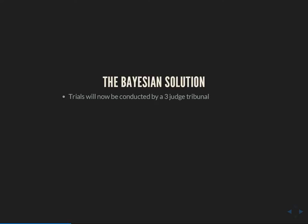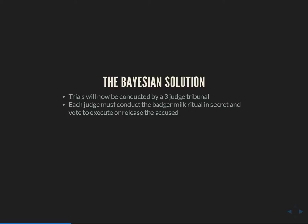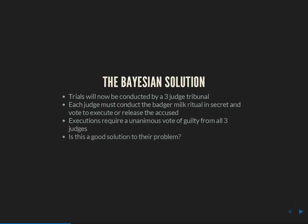So they came up with an improved system. Now trials will be conducted by a three-judge tribunal, not just a judge acting by himself. Each judge conducts their badger milk ritual completely in secret — they won't be able to influence or corrupt each other. Then they secretly vote to execute or release the accused. Executions now require a unanimous vote of guilty from all three judges. The question is: is this a good solution to their problem?